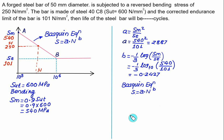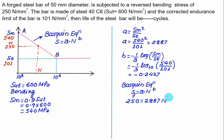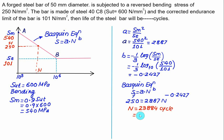In the Basquin equation, substitute SF = 250, A = 2887, and B = −0.2427 to calculate the number of cycles N before fracture occurs. Solving gives N ≈ 23,884 cycles, approximately 2.3 × 10⁴ cycles. This value must be between 10³ and 10⁶, which confirms it is a valid finite life result.